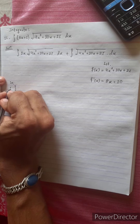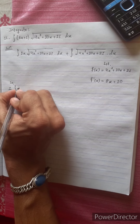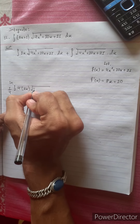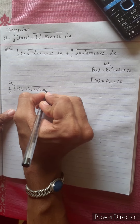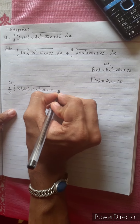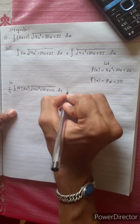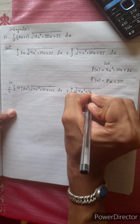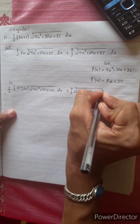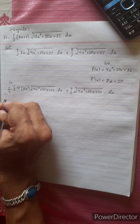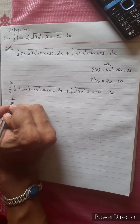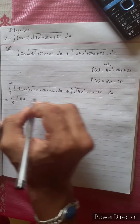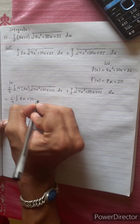For the integration, we use 1/4 times 4, giving us 8x. We have 1/4 and we have 8x. Let's do the same thing: we have 4x squared plus 20x plus 21 in dx, plus integration of 20x plus 21 dx. This equals 1/4, and we get 8x plus 20 minus 20.